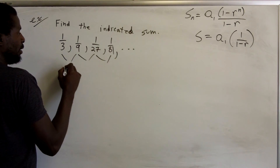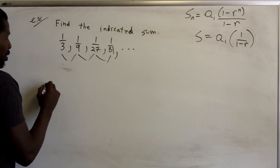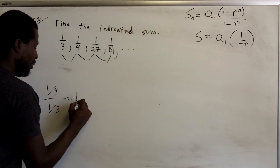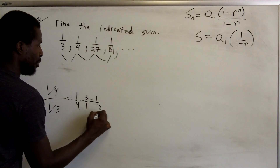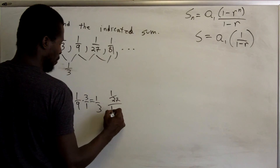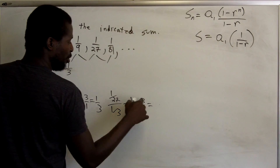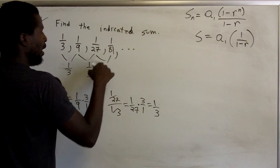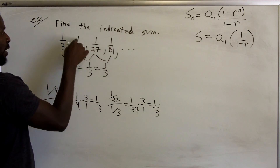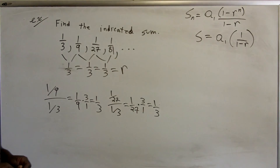First, confirm it's geometric by checking the common ratio. (1/9) ÷ (1/3) = (1/9)·(3/1) = 1/3. And (1/27) ÷ (1/9) = (1/27)·(3/1) = 3/27 = 1/3. Since all these ratios equal 1/3, this is a geometric sequence with common ratio r = 1/3.